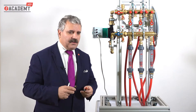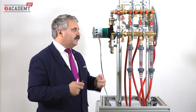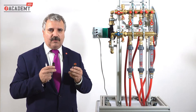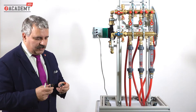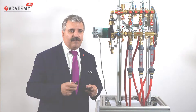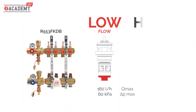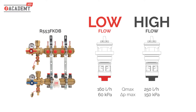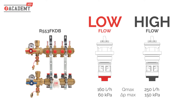To show you the main features, we have here a typical manifold for radiant floor applications with the dynamic balancing cartridges installed in the return manifold incorporating our DB technology. There are two flow rate ranges: the low flow version up to 160 liters per hour with a maximum differential pressure of 60 kilopascal, and the high flow version up to 250 liters per hour with a maximum differential pressure of 150 kilopascal.